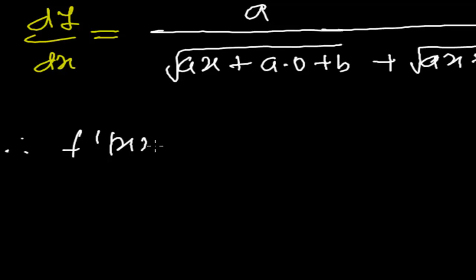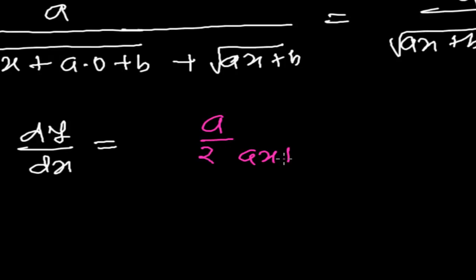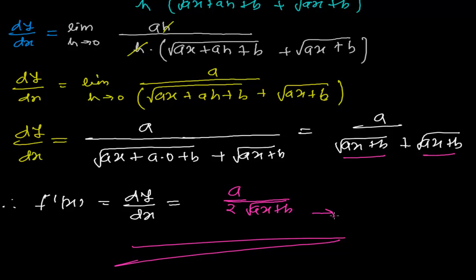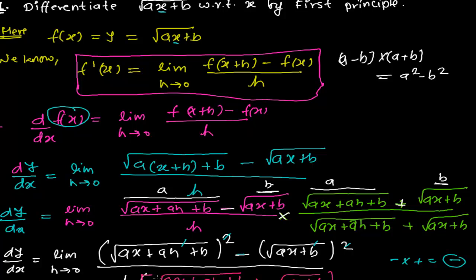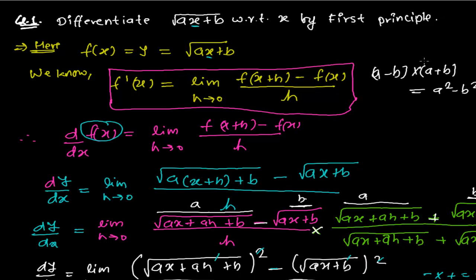Finally, the derivative f prime of x, that is dy by dx, equals a divided by 2 times root over ax plus b. The 2 comes because ax plus b appears twice. This is our required derivative, solved using the first principle method. I hope you'll be solving lots of problems like this. If you have any questions, comment below or email me. Check my website skankblogger.com for more practice problems on finding derivatives from first principles. See you in the next video — bye bye!